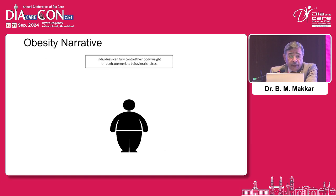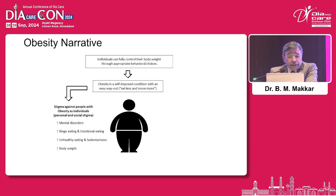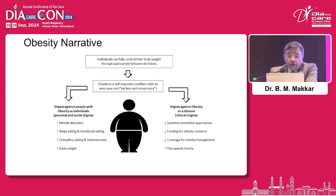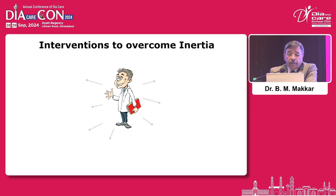In summary, the narrative that individuals can control their body weight through appropriate behavior choices — that obesity is a self-imposed condition with the easy way out of eating less and moving more — leads to stigma against people with obesity, resulting in disorders of mental health, binge eating, and unhealthy eating habits that further increase weight. On the other hand, it also leads to clinical stigma: decreased systemic preventive approaches, decreased funding for obesity research, decreased coverage for obesity management, and increased therapeutic inertia — all increasing individual suffering and impeding healthcare system development in supporting obesity.